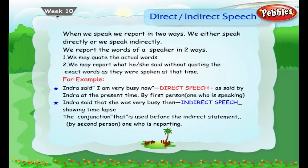When we speak, we report in two ways. We either speak directly or we speak indirectly. We may quote the actual words, or we may report what he or she said without quoting the exact words as they were spoken at that time. Example: Indra said, 'I am very busy now.' This is direct speech. Indra said that she was very busy then — this becomes indirect speech, showing time lapse.